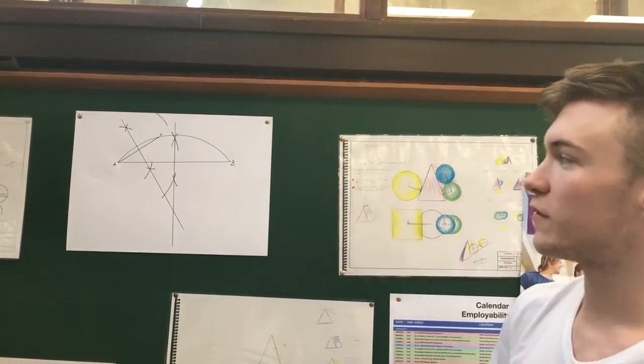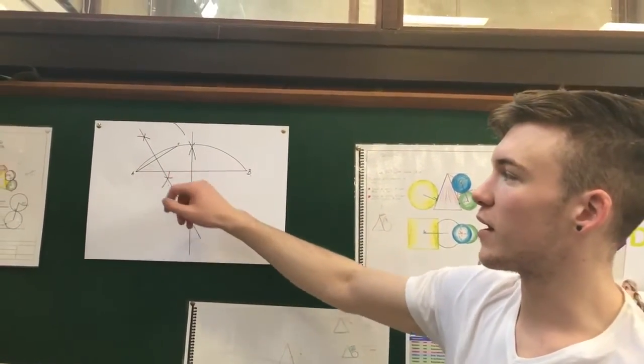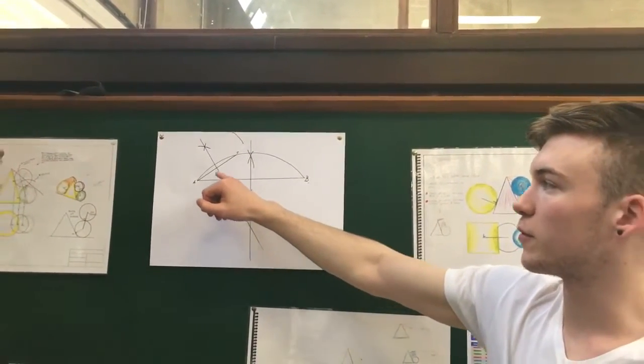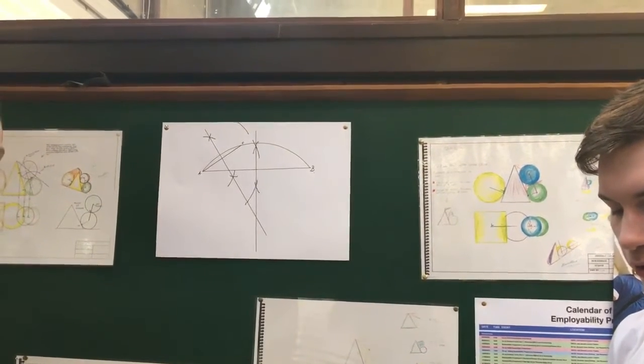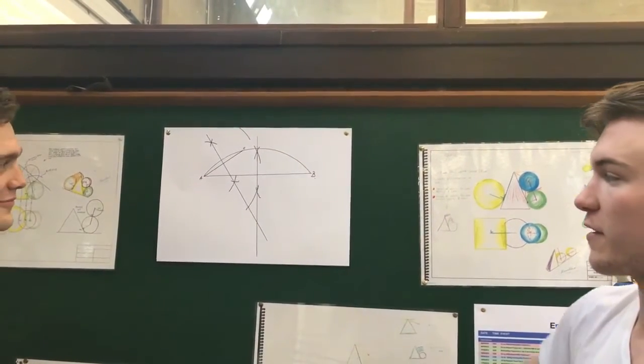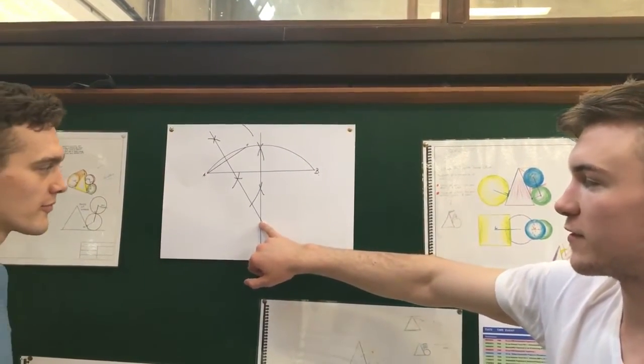So we now have two lines that bisect the curve, and we've bisected two lines to form perpendicular lines that touch the curve. So when we draw both of these lines down, where they meet is the center point. This point here is the center point.